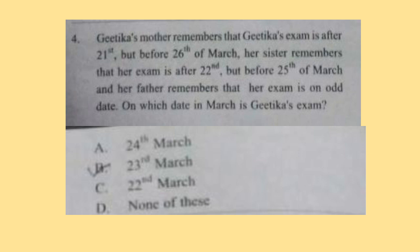Question 4: Githika's mother remembers that Githika's exam is after the 21st but before the 26th of March. Her sister remembers that her exam is after the 22nd but before the 25th of March. And her father remembers that her exam is on an odd date. On which date in March is Githika's exam? Correct answer is option B, 23rd March.